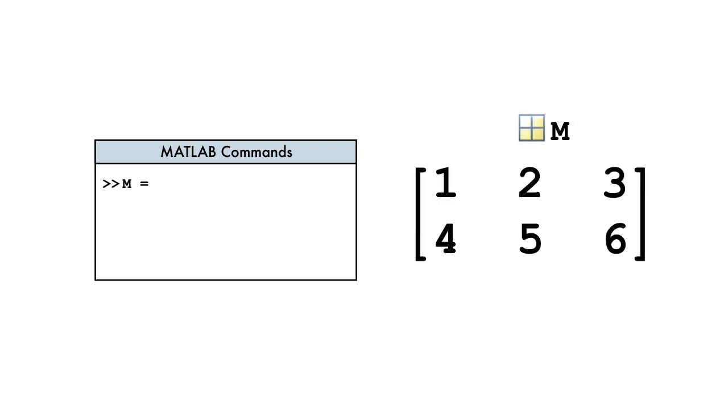Let's try creating a small matrix, m. We begin a matrix definition with a left square bracket. Just like a row vector, we separate elements in the first row of a matrix with commas.